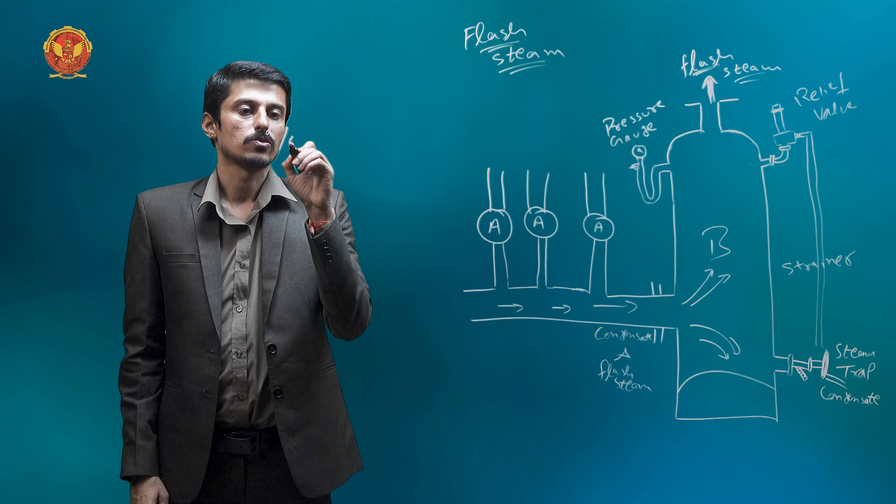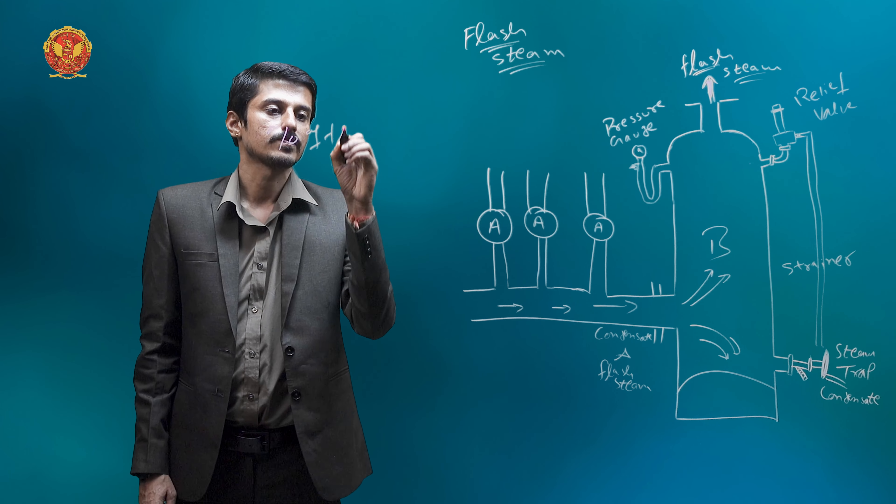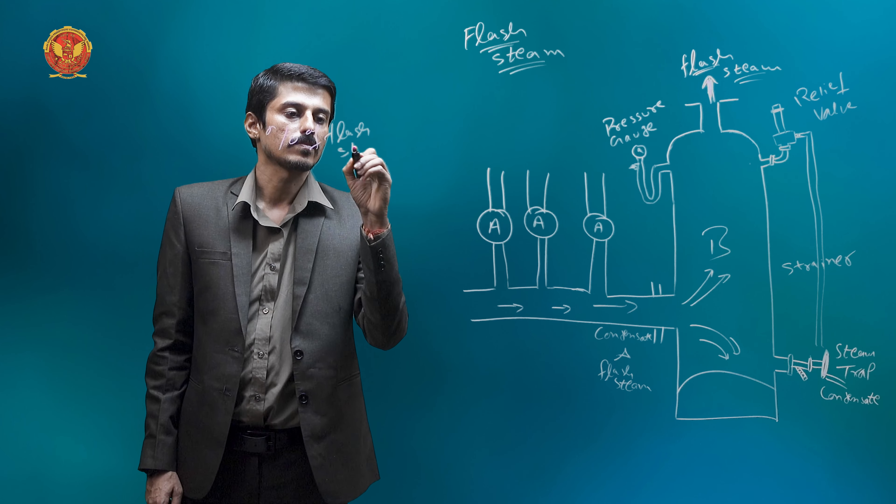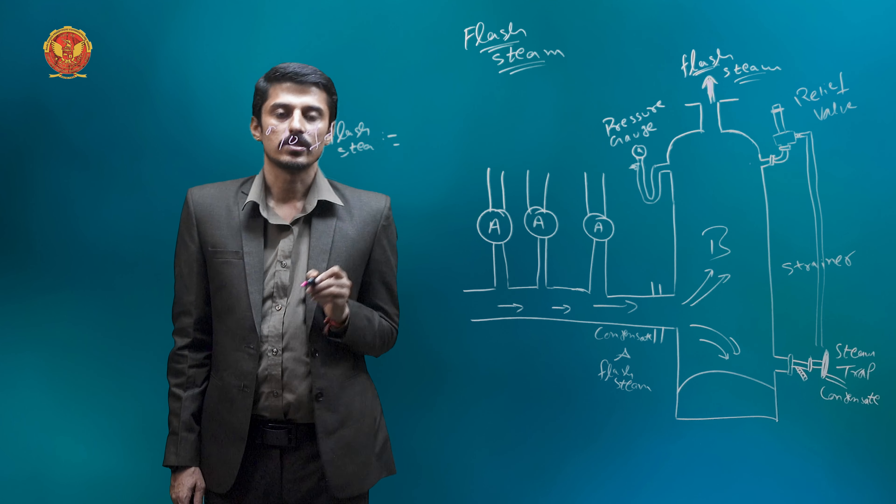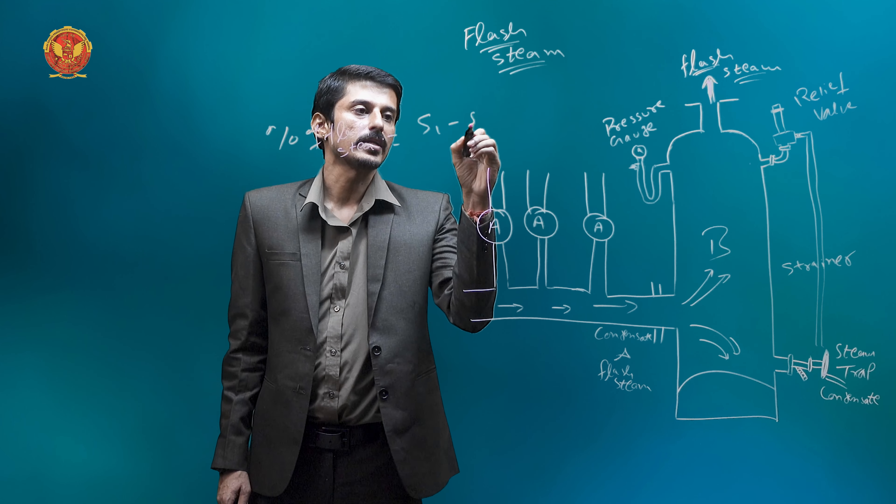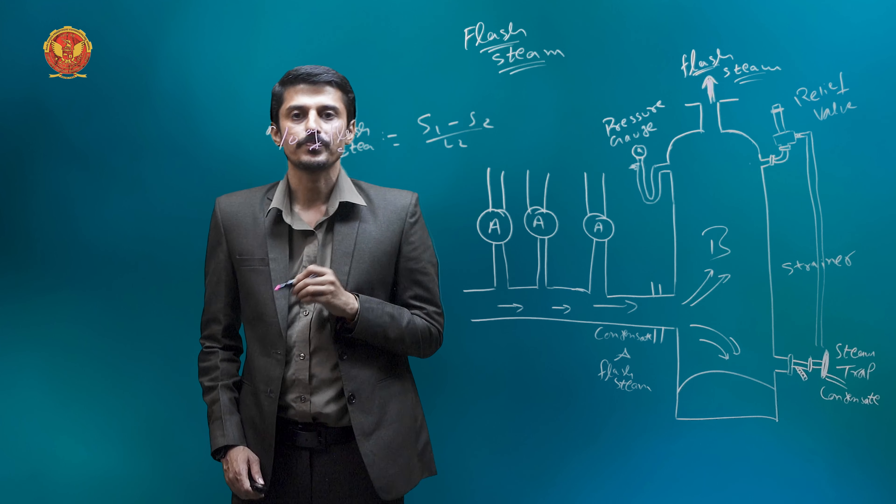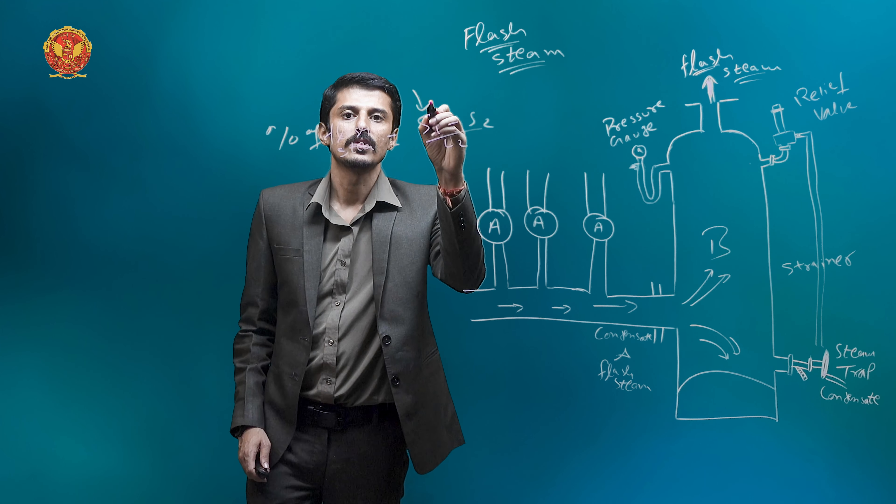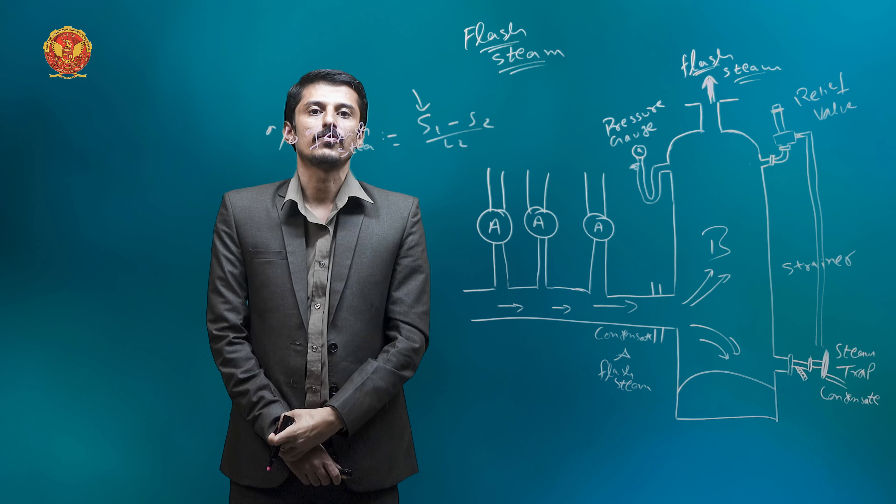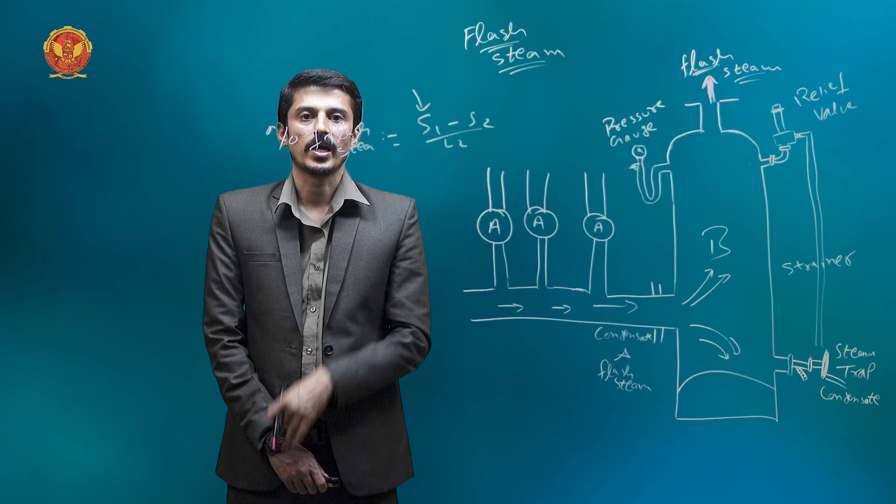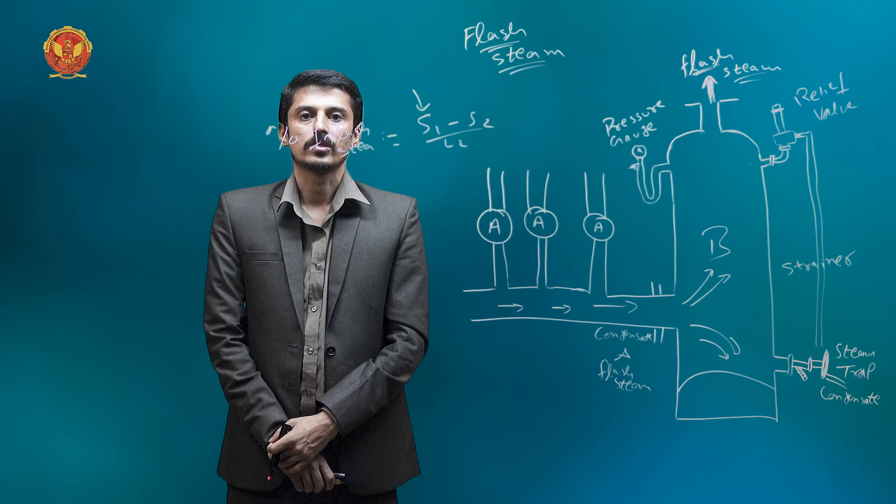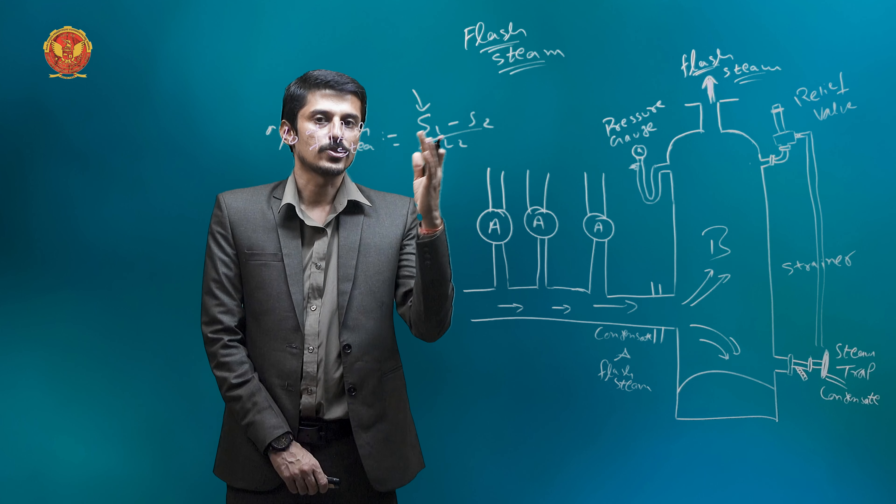So the percentage of flash steam is available. The percentage of flash steam is directly equal to S1 minus S2 upon L2. It is the sensible heat of high pressure condensate, which is the high pressure condensate. How much is the sensible heat?